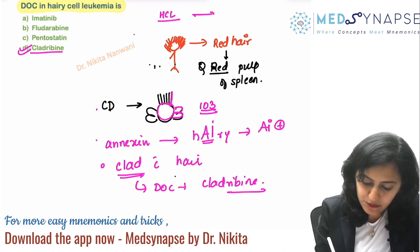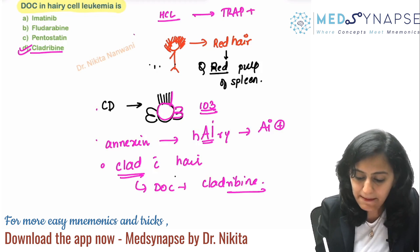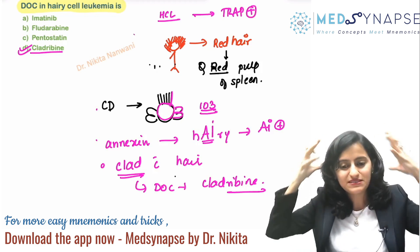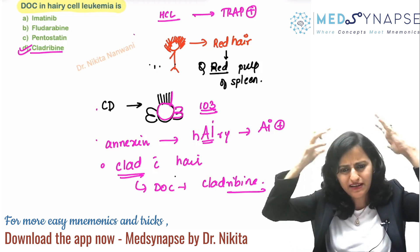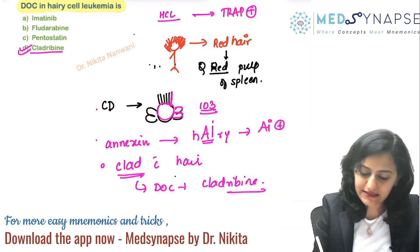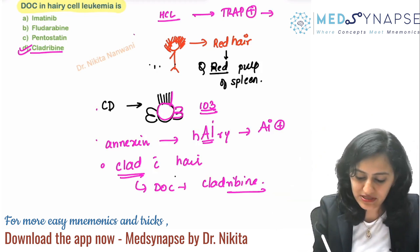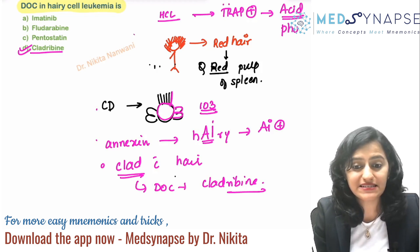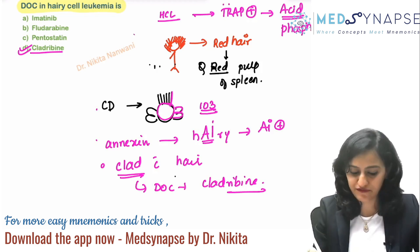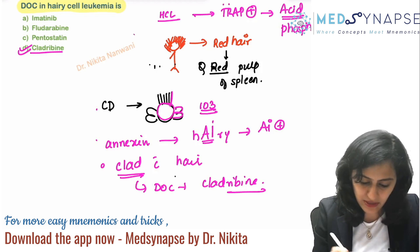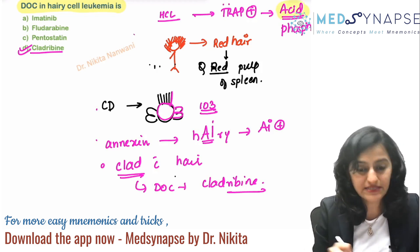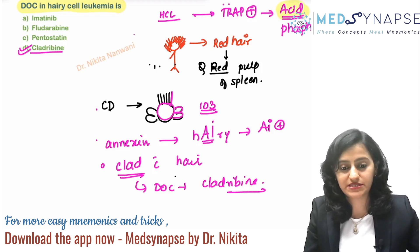Remember it is TRAP positive. Imagine the red hair — a person clad with red hair whose hair are trapped and entangled. It is TRAP positive. Tartrate resistant — remember this is acid phosphatase, not alkaline phosphatase. Very important point: this is tartrate resistant acid phosphatase positive.